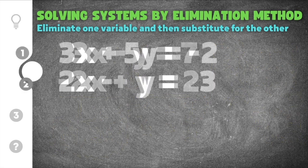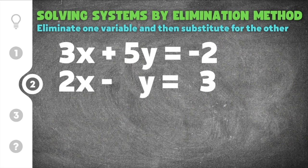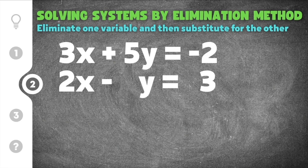Moving on to the second practice problem using the elimination method. This problem gives us 3x plus 5y equals negative 2 and 2x minus y equals 3. This time, if you were to add straight down, nothing would cancel — the x wouldn't cancel and the y wouldn't cancel. So we have to pick one equation and multiply so that when you add straight down, one of the variables will cancel.